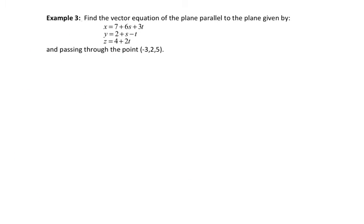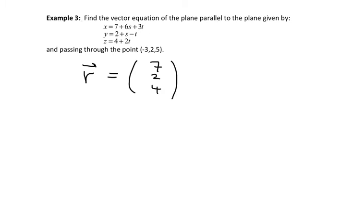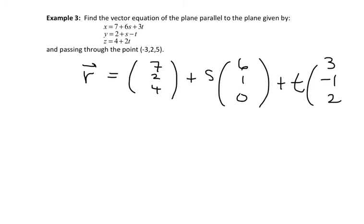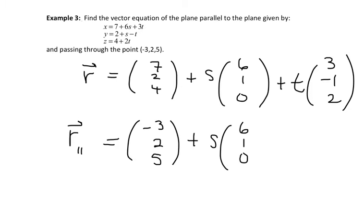Now we want to find the vector equation of a plane parallel to the given plane that passes through the point (−3, 2, 5). Since the planes are parallel, they have the same direction vectors — just a different point. Turning the first equation back into vector mode: r = (7, 2, 4) + s(6, 1, 0) + t(3, −1, 2). So the new parallel plane is r_parallel = (−3, 2, 5) + s(6, 1, 0) + t(3, −1, 2).